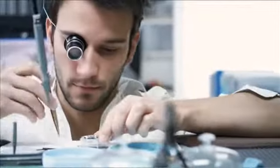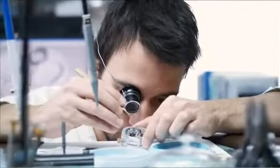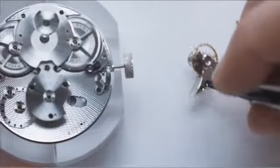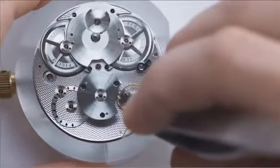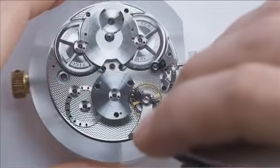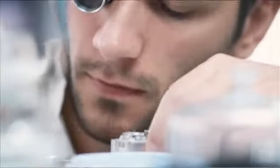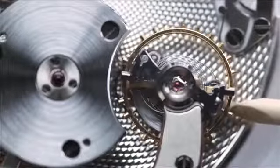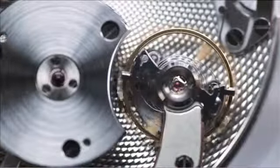For the new Jules Audemars watch, not only was the AP escapement reinvented, but a whole new movement was designed. Calibre 2908 beats at the exceptional frequency of 43,200 vibrations per hour. This increase in the oscillation frequency considerably improves the precision of the movement.